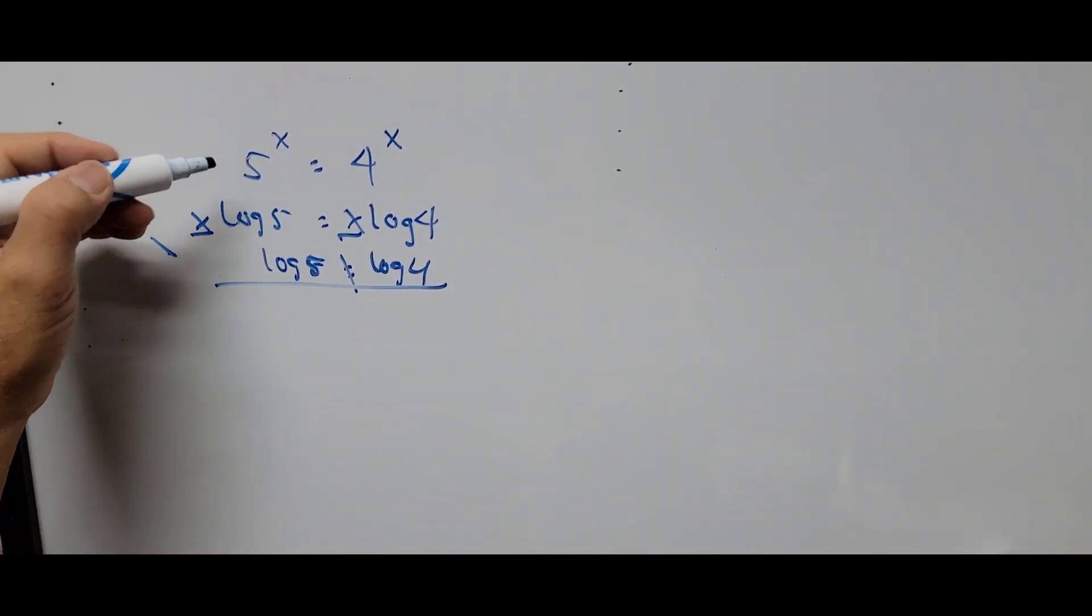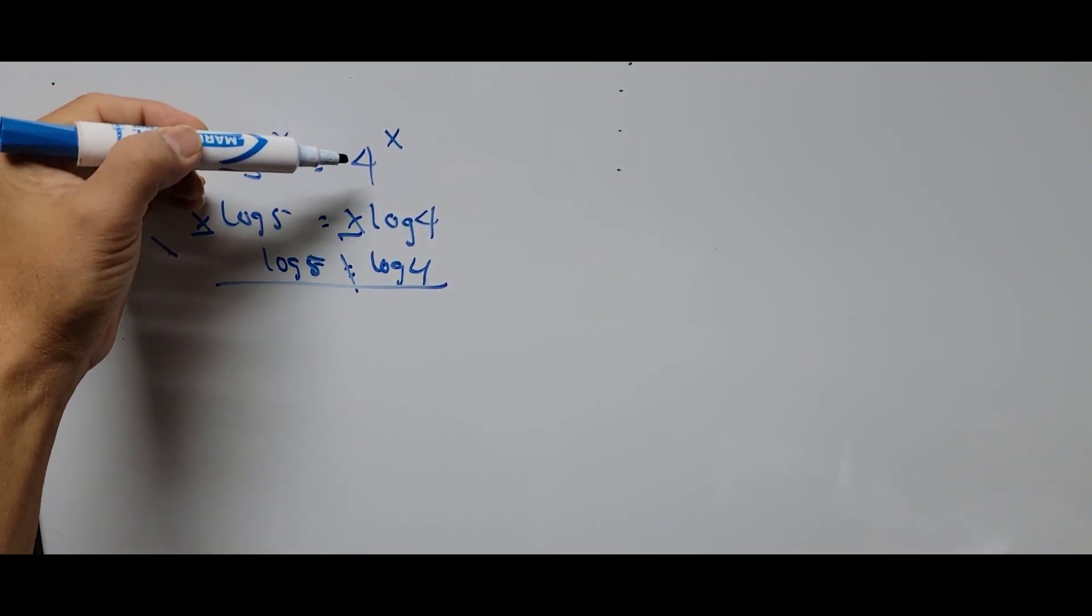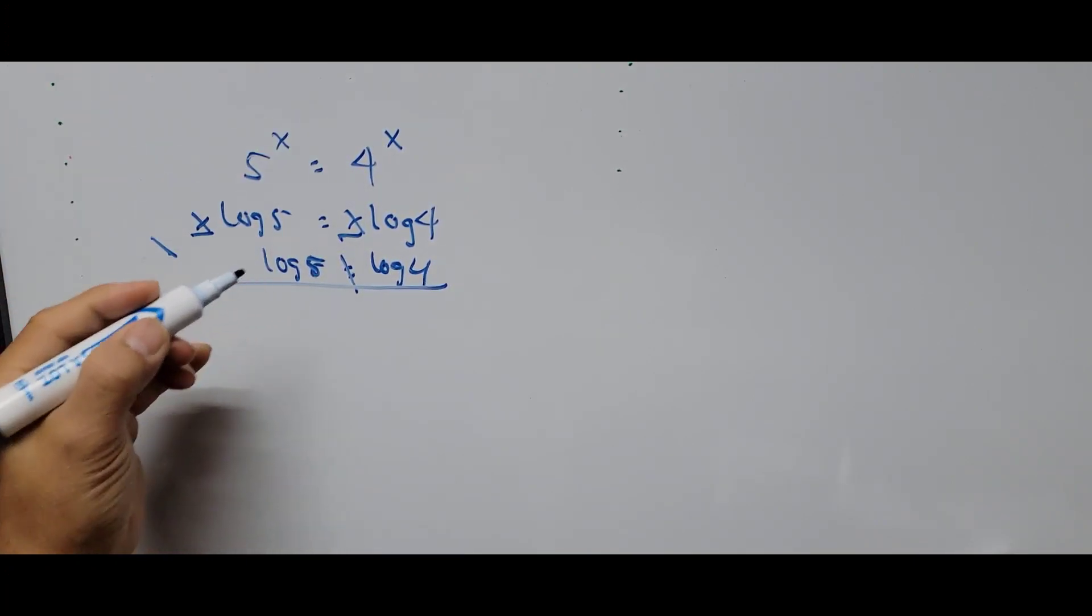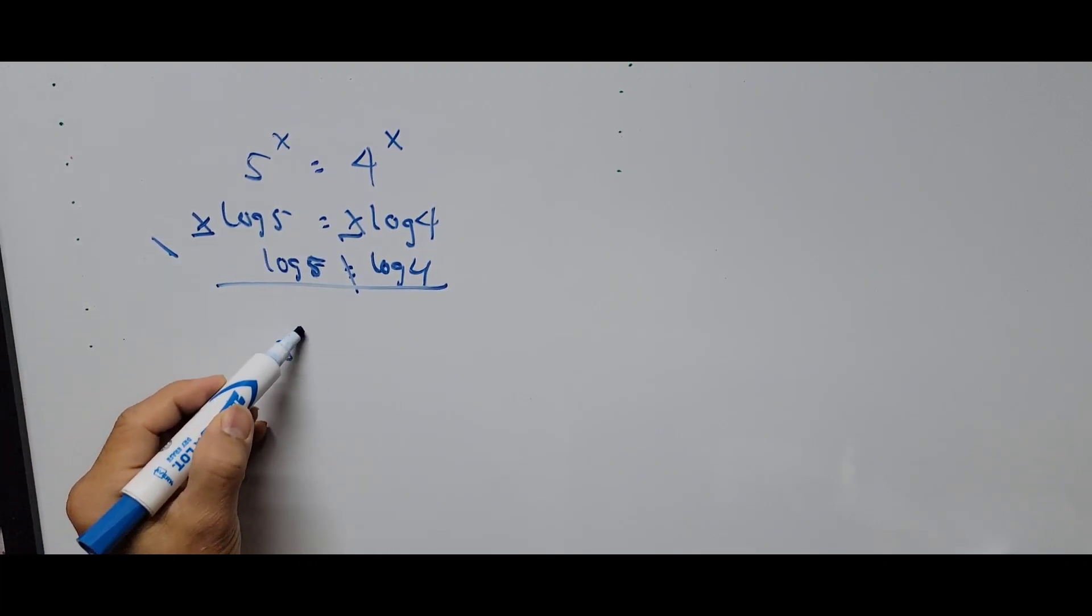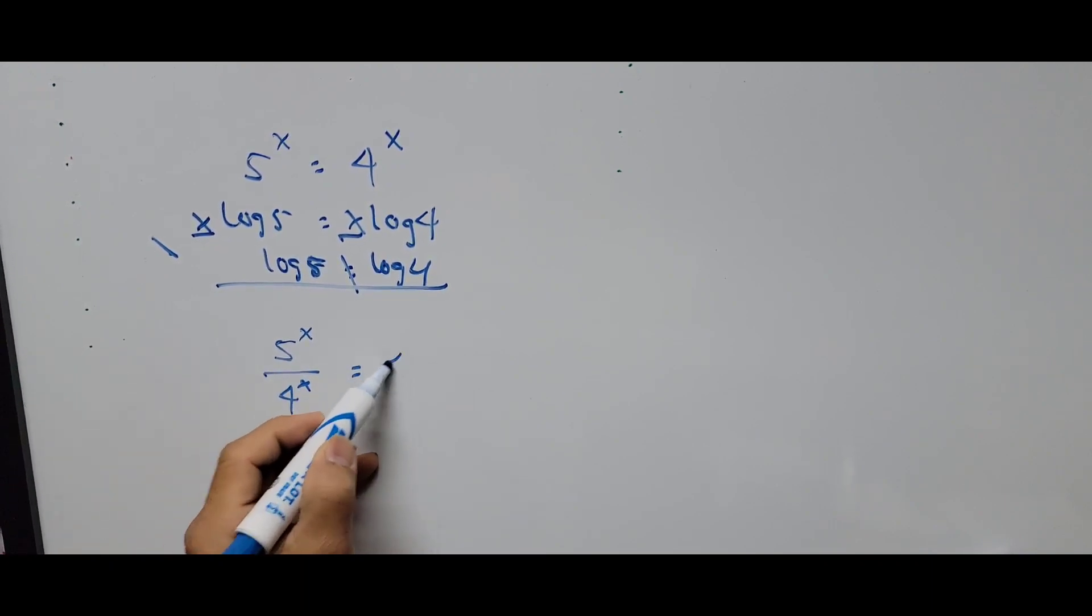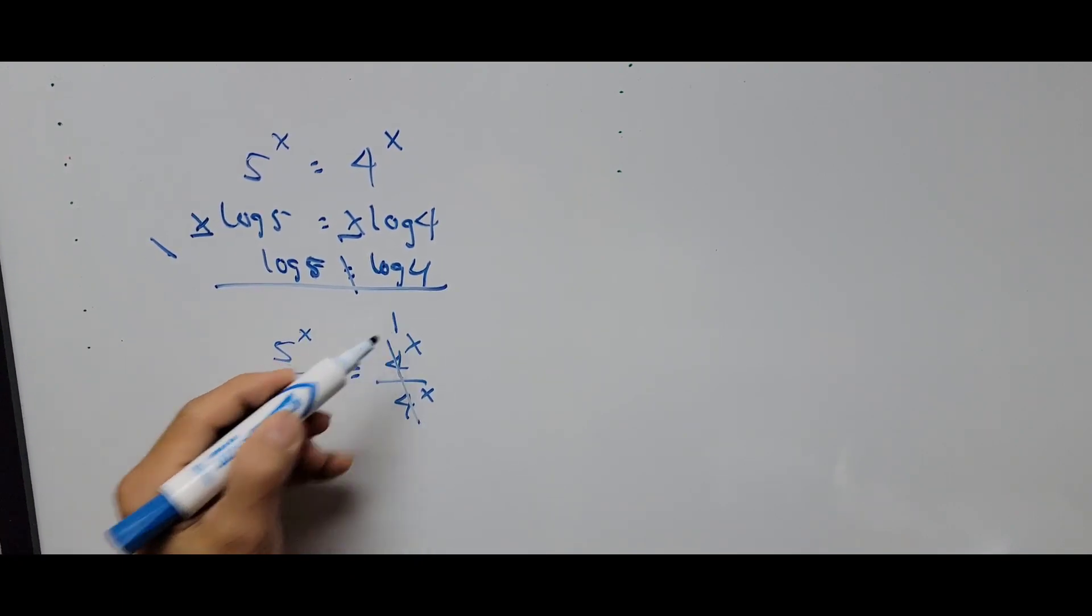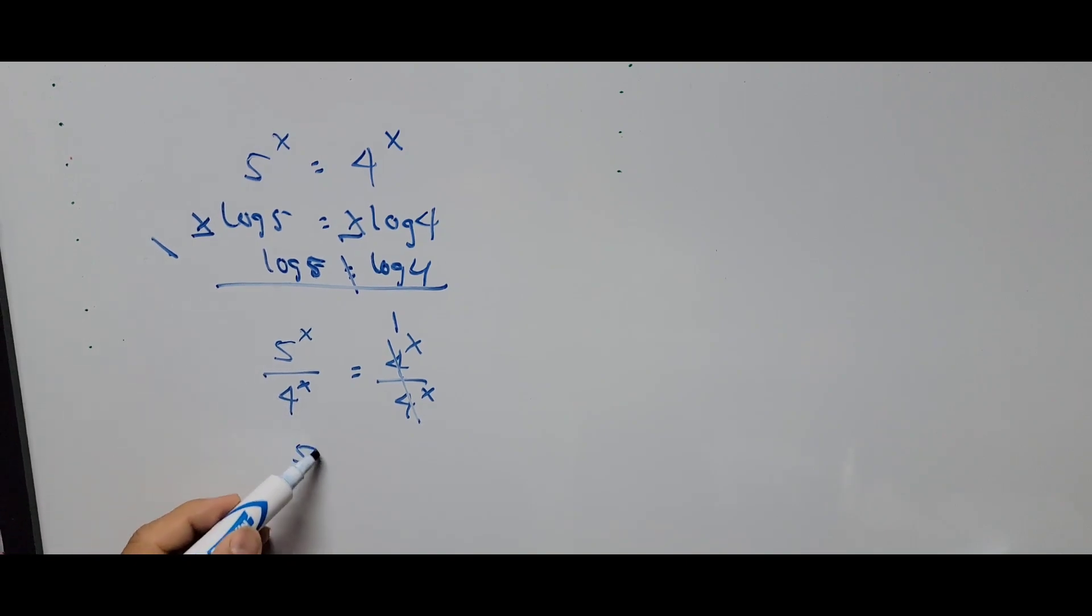We cannot use that here to solve for X. We'll be dividing the whole equation by 5 power X or by 4 power X. Let's divide by 4 power X. This is now 5 to the X divided by 4 power X equals 1. The left side is 5 over 4 to the power X equals 1.